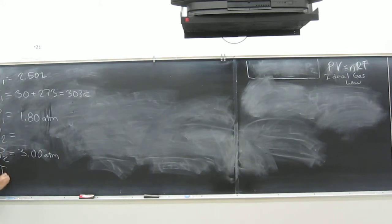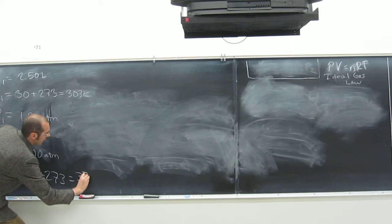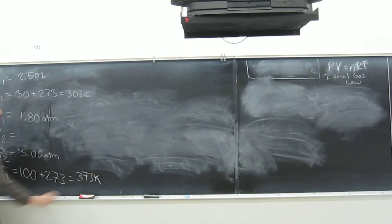And T2 is going to be 100, but are we going to leave it in degrees Celsius? So we're going to add the 273 to it. So what do we get? 373 Kelvin. So this we were looking for.